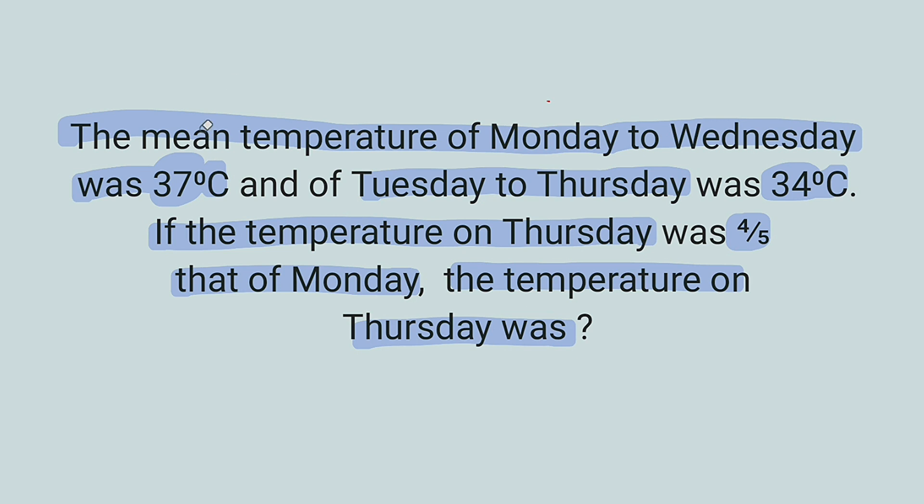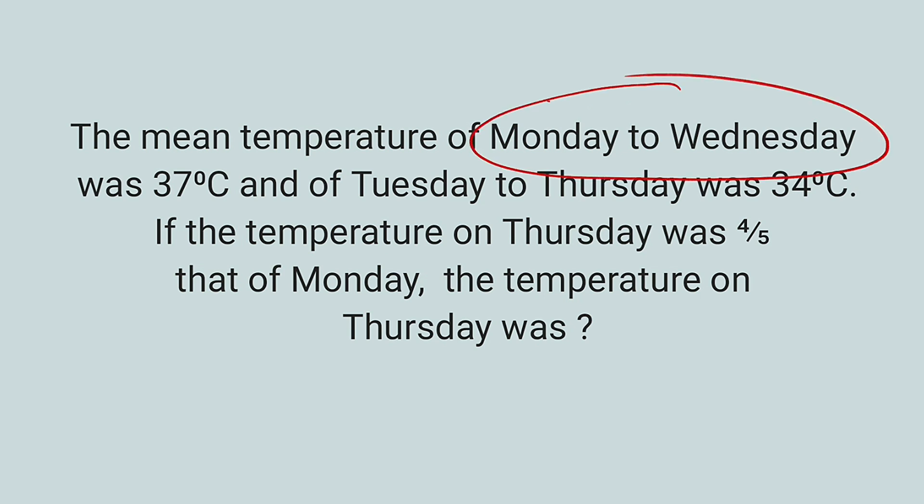All right, let's get started with the solution. But remember that mean can be defined as the sum of items divided by number of items. We are talking about temperature here for respective days. Let's form two equations here. We have Monday to Wednesday, where we have three days: Monday, Tuesday, and Wednesday. So for the mean, we are going to add temperature of Monday plus that of Tuesday plus that of Wednesday, and we have to divide by three because we have three separate temperatures.